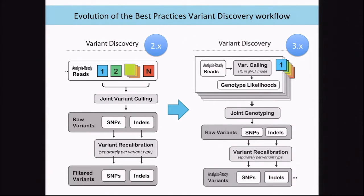The old style variant discovery — the 2x workflow — used Unified Genotyper for a massive joint calling operation, then all the downstream analysis. In the new 3x style, we've added a new step: individual genotype likelihood calculation, which is expensive per sample but never has to be repeated. Then each time we want to make variant calls, we do a joint genotyping across the entire cohort. We can repeat that because it's much cheaper — it never has to touch the BAMs, it just looks at these summary statistics.